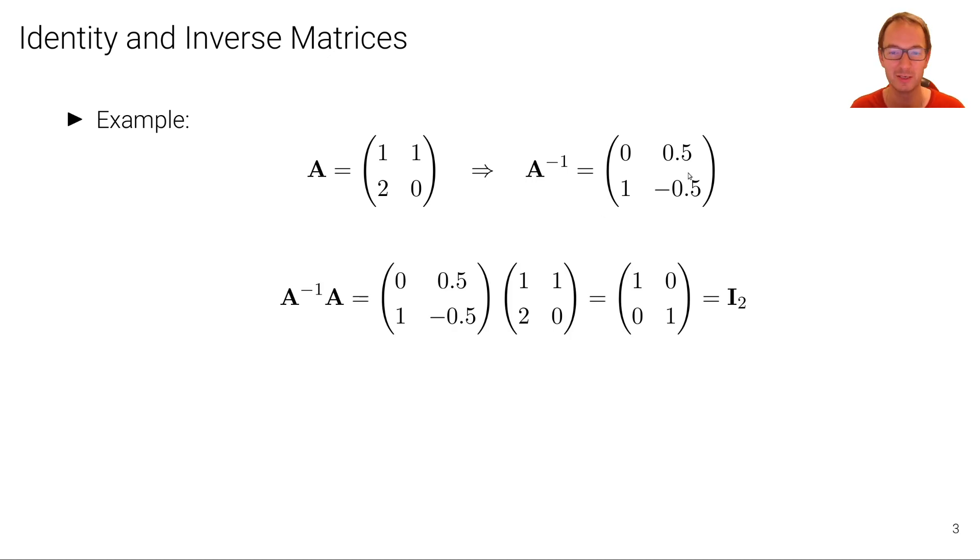And if I take now the inverse and multiply it with the original matrix, I get back the identity matrix here, which is I_2, right? So if I multiply this vector with this vector here, I have 1 times 0 and 0.5 times 2, this is 1. And similarly for this element here, I multiply this with this, which is 0, etc.